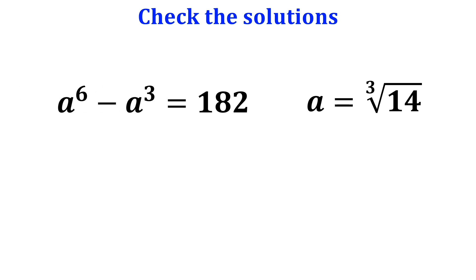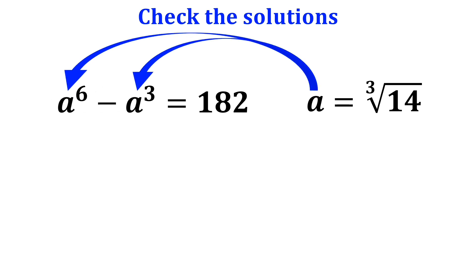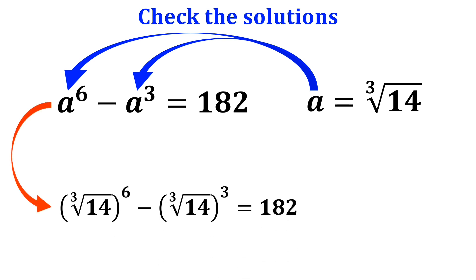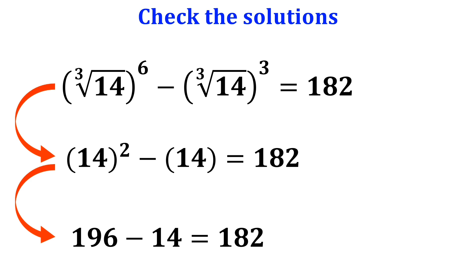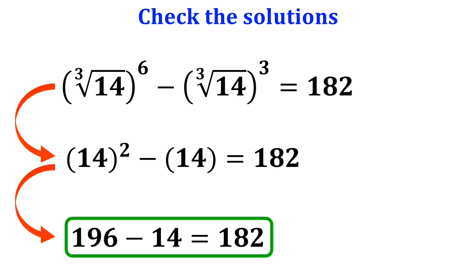Now let's check the second solution. We substitute the cube root of 14 for a in the original equation, so this expression becomes the cube root of 14 to the power of 6, minus the cube root of 14 to the power of 3, equals 182. This simplifies to 14 squared minus 14, which equals 196 minus 14, which is equal to 182. So the second solution we found was also correct. If this video was helpful to you, please don't forget to like and leave a comment, and subscribe to the channel to see more math videos.